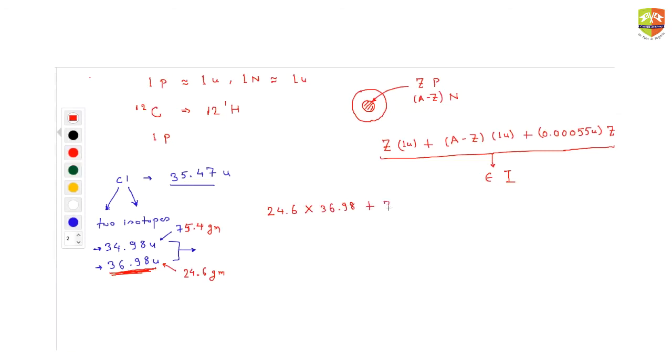What is observed in the mass spectrograph is the weighted average. So 24.6% of 36.98 plus 75.4% of 34.98. You can see these two are close to integer when you talk about chlorine in pure form, a single isotope. But when they exist in a mixture, you observe the weighted average of their atomic masses. This comes out to be 35.47 units.